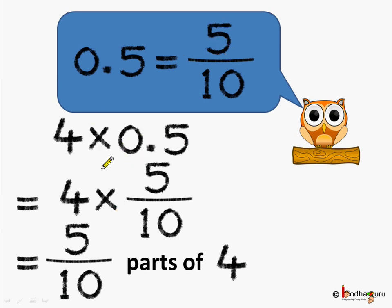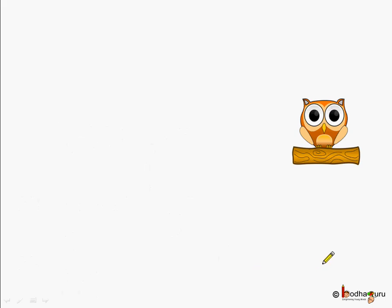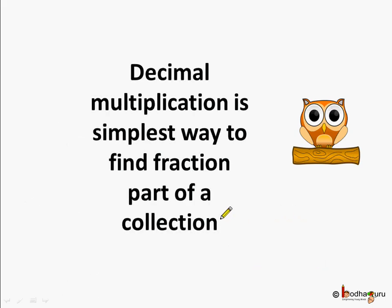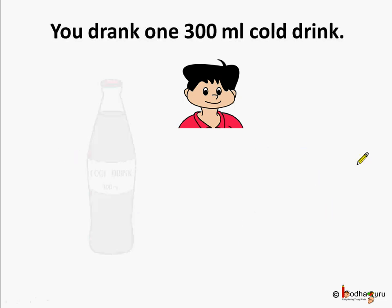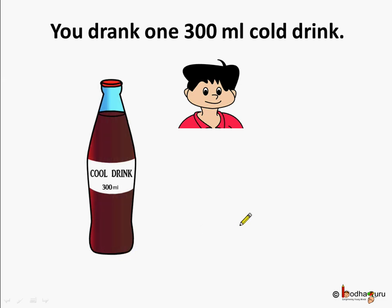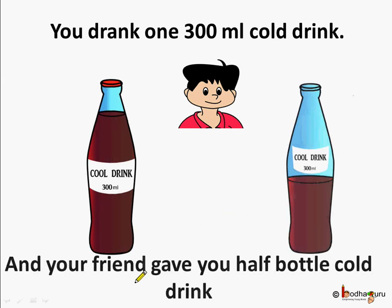Four multiplied by zero point five is nothing but four multiplied by five by ten — that is equal to five by ten parts of four. So decimal multiplication is nothing but a simple way to find the fraction part of a collection — five by ten parts of four, like that example. Let's see how we do this multiplication. Let's take an example. You had a 300 milliliter cold drink bottle and your friend gave you half a bottle of cold drink more.